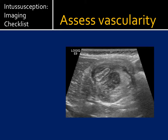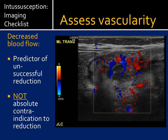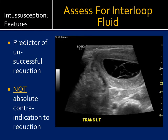Some important things to assess on ultrasound: the vascularity of the intussusceptum and intussuscipiens. Decreased blood flow is an overall predictor of an unsuccessful reduction — it is not an absolute contraindication, but it is helpful when counseling the family and surgeons about chances of success. Similarly, the presence of interloop fluid between the intussusceptum and intussuscipiens is another predictor of an unsuccessful reduction, though again not an absolute contraindication.